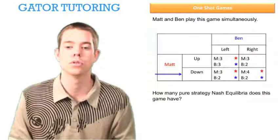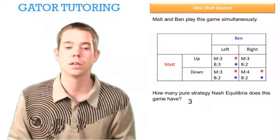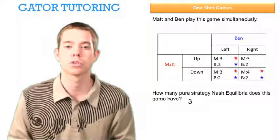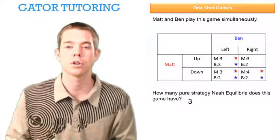And we see that this game has three pure strategy Nash equilibria, because three boxes have two stars in them.